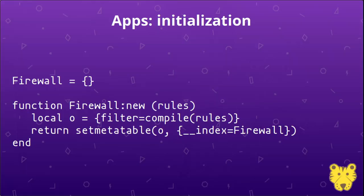This code defines an app called 'firewall.' In its constructor — the 'new' callback — it compiles a filter from the rules passed to it during configuration. The call to setmetatable is Lua's idea of doing object-oriented instantiation using prototype-based object orientation. This will be executed by engine.configure to create an instance of the app.